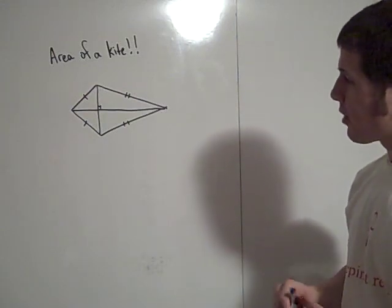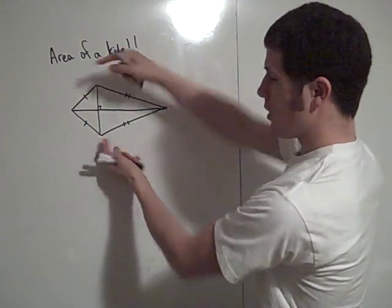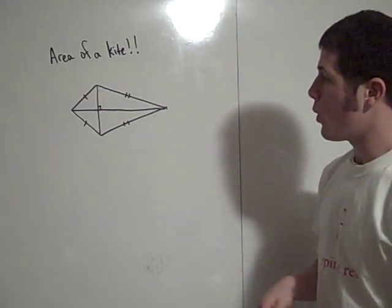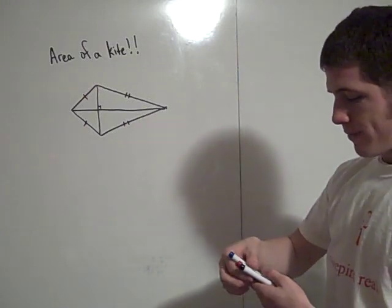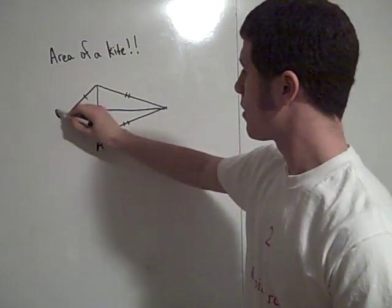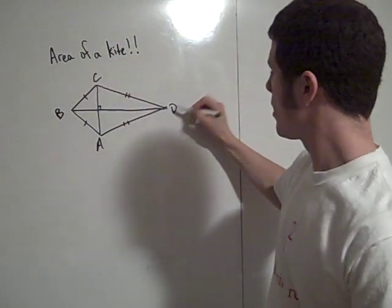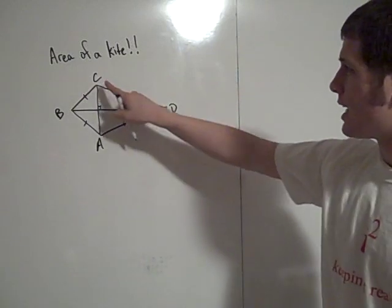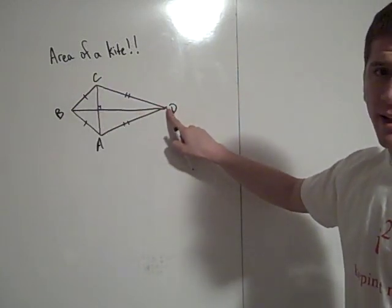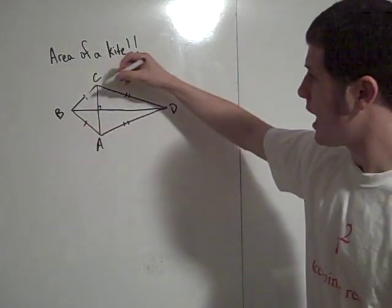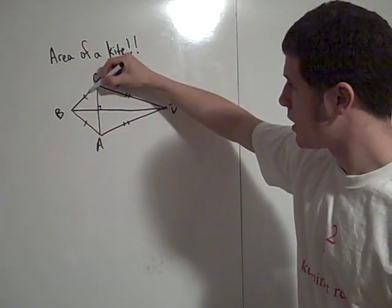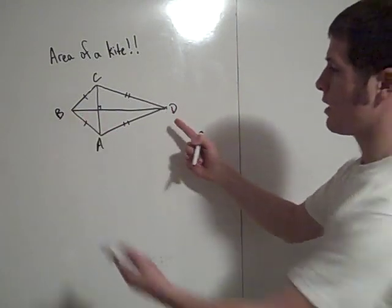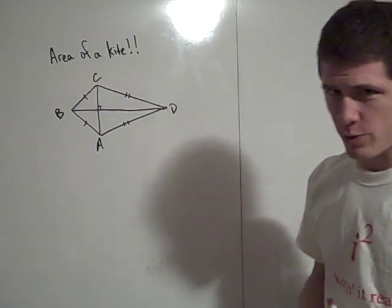One thing you should notice is that triangle ABD is congruent to triangle CBD by side, side, side. BC and BA are congruent. CD and AD are congruent. And they both share side DB. DB is congruent to itself by the reflexive property.